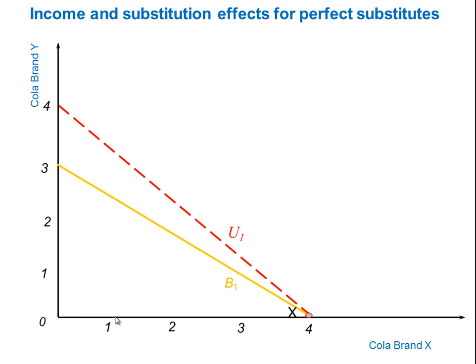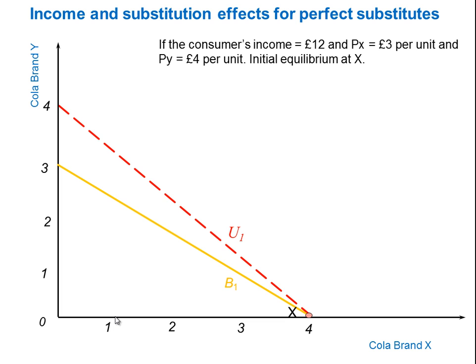Now, the other part of this is that we need to think about the constraint. Individuals are trying to maximize their satisfaction — their utility — subject to constraints imposed upon them by the income they have and the prices of the goods and services they want to buy. So let's say that the consumer's income is £12 in total. The price of brand X is £3 a unit and the price of brand Y cola is £4 a unit.